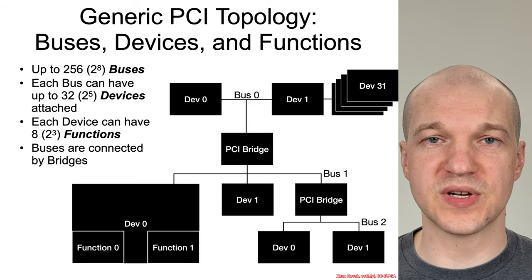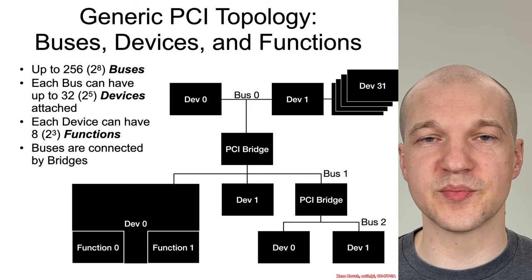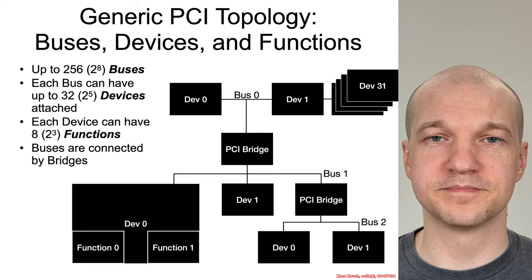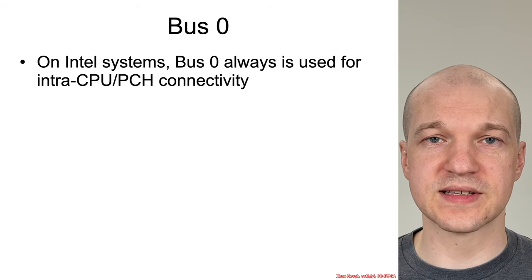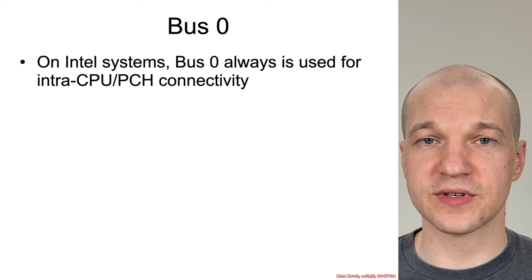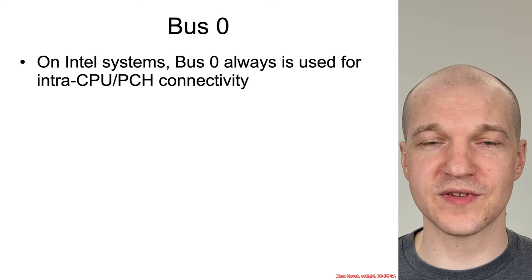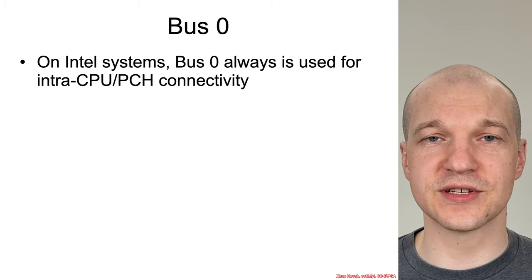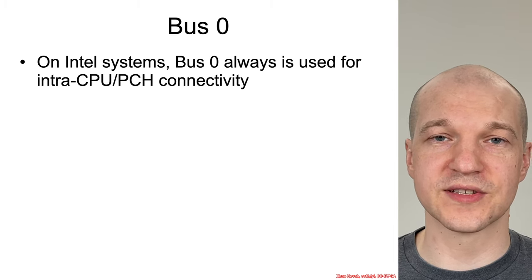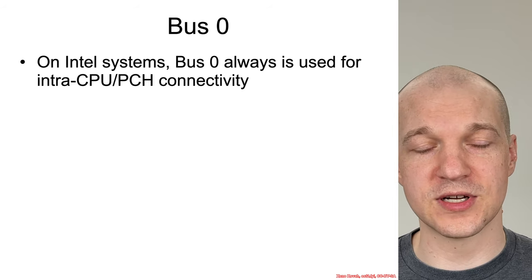Multiple PCI buses are connected via bridges — that's how one device on one bus talks to devices on other buses. For instance, the CPU, which will frequently be on bus zero, talks to something like a Wi-Fi Bluetooth card on another bus. On Intel systems, bus zero is always reserved for Intel themselves, so that's where you'll find a lot of the interesting bits referenced earlier in the class. In this section you'll start to fully understand why things like the DRAM controller are on bus zero, device zero, function zero, and why things like the LPC device are on bus zero, device 31, function zero.